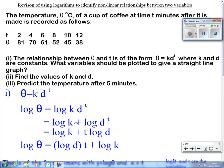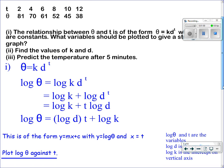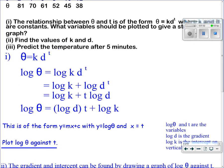The log of d^t is t times the log of d. So our equation can be rewritten as log θ = (log d) × t + log k.